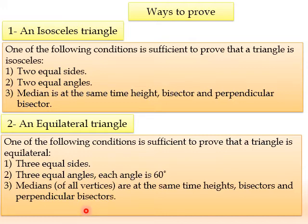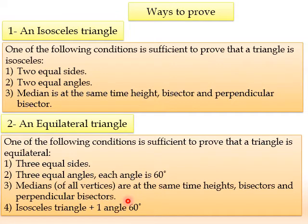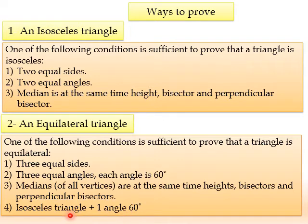So if we have three equal sides, or three equal angles each equal to 60 degrees, or a median that is at the same time a height, bisector, and perpendicular bisector, we can say that our triangle is equilateral. Another way to prove: we know that an isosceles triangle has two equal angles. If we prove that an isosceles triangle has one angle equal to 60 degrees, then this isosceles triangle is particularly an equilateral triangle.